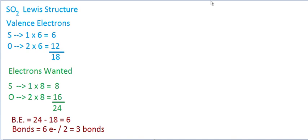Now let's actually draw the Lewis structure. We need to figure out which element is in the middle. The fact that sulfur is written first, that there are multiple oxygens but only one sulfur, and that sulfur is more electropositive all indicate sulfur should be the central atom. So here are 2 oxygens and a sulfur in the middle, each starting with 6 valence electrons surrounding them.